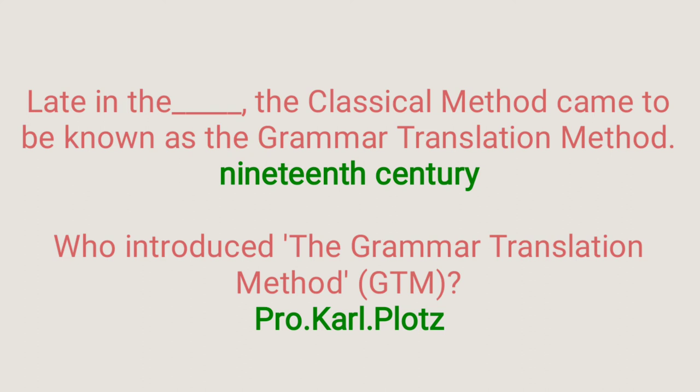Late in the 19th century, the classical method came to be known as the grammar translation method. Who introduced the grammar translation method (GTM)? Answer is Professor Karl Plötz. GTM is one of the oldest teaching methods of second language acquisition. The strategies were based on learning the strict rules of grammar of the target language, comparing the syntax of the native and target language, and extracting specific sentences or paragraphs to be translated back and forth.